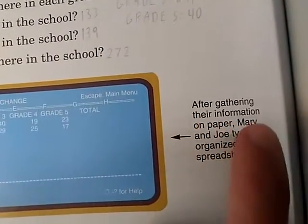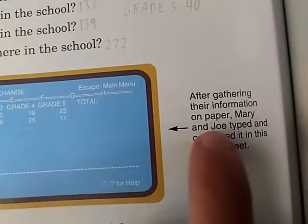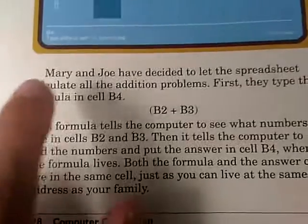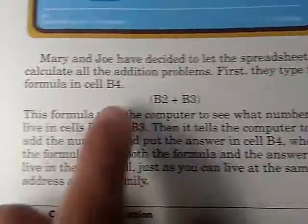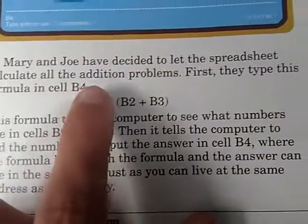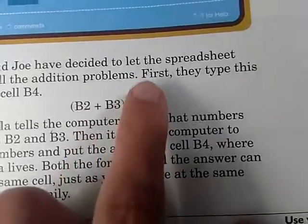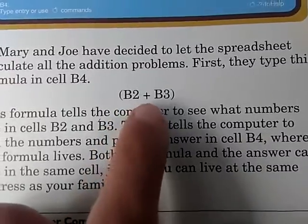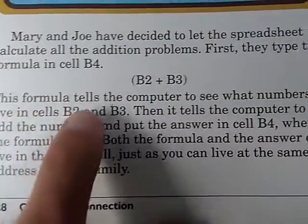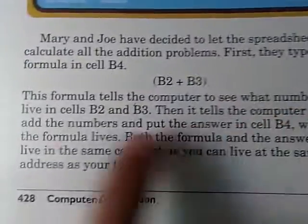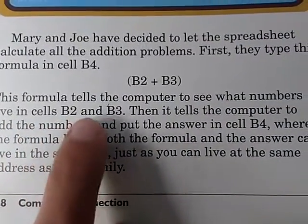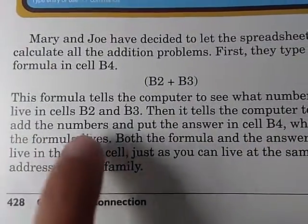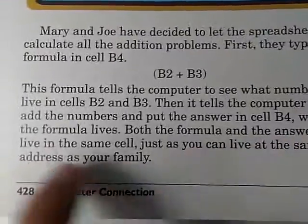After gathering the information on paper, Mary and Joe typed and organized it in this spreadsheet. Mary and Joe decided to let the spreadsheet calculate all the addition problems. They typed this formula in cell B4: B2 plus B3. This formula tells the computer to see what numbers live in cells B2 and B3, then add the numbers and put the answer in cell B4.